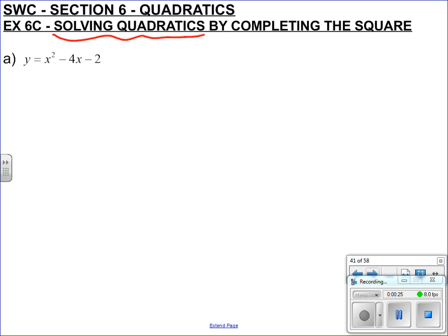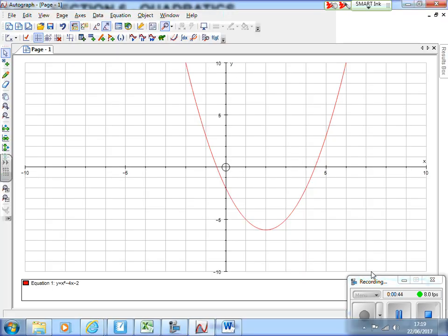What do we mean by solving quadratics? We mean when we set y equal to 0, so that quadratic does not always equal 0, it only equals 0 when it crosses the x-axis. So here's the graph right in front of you, and you can see it crosses the x-axis here and here, and they don't look like nice numbers.